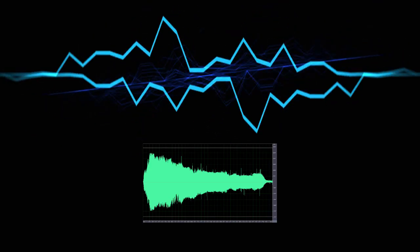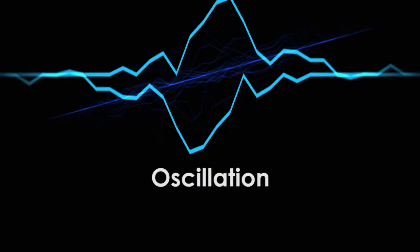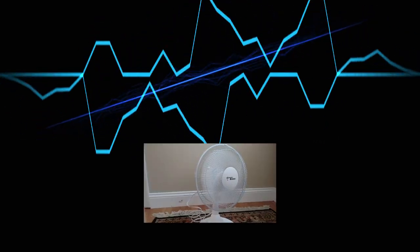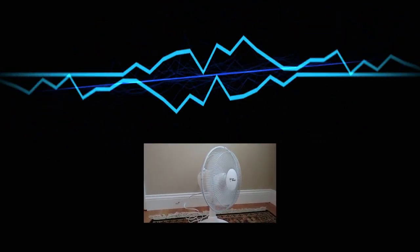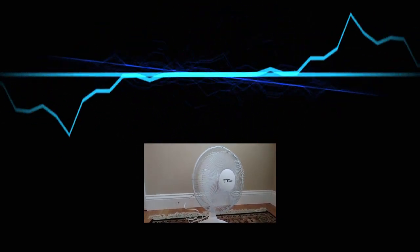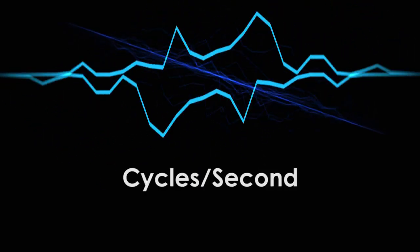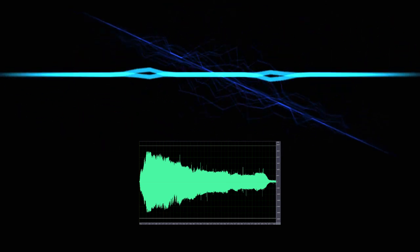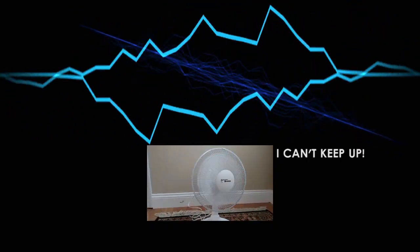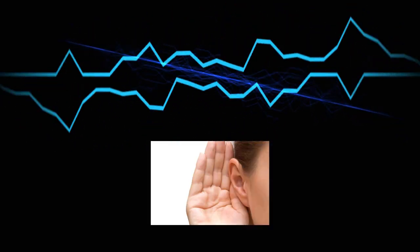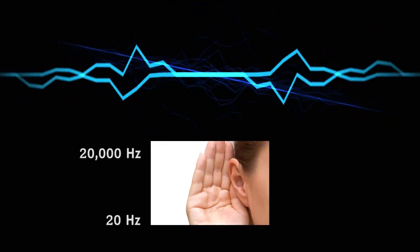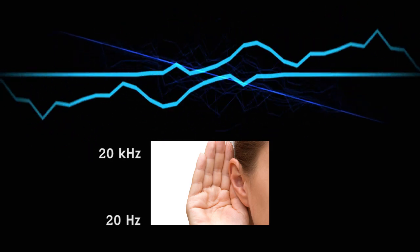Frequency. A sound wave is a type of repeated pattern of movement called an oscillation. You're probably very used to oscillations — you know those fans in your house that rotate back and forth? They're called oscillating fans because this back-and-forth cycle is an oscillation. The amount of time it takes for an oscillation to complete one full cycle is its frequency. The frequency of oscillations is measured in cycles per second, or hertz. Because sound waves oscillate, they also have a frequency. Generally, people are able to hear sound frequencies as low as 20 hertz and as high as 20,000 hertz, also known as 20 kilohertz.